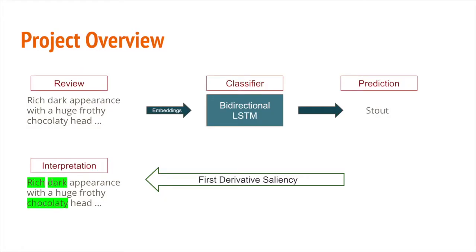To give you an overview of our project, our goal was to take a review such as the one provided there, utilize trained Word2Vec embeddings of the words in this review to feed them into a bidirectional LSTM classifier model, and then predict the type of beer that this review was pertaining to.